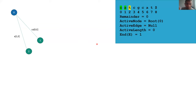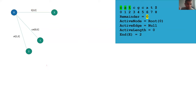Let's continue adding T. Same process — increase the remainder, increase the end, which automatically updates the other edges. We check if there's a T coming from the active node. There isn't, so we add it in, then decrease the remainder. Just like the first two steps, this is straightforward — you're simply adding in edges because nothing exists yet.